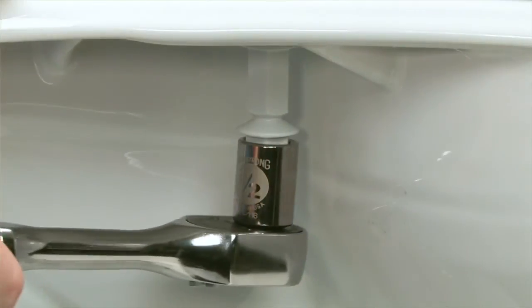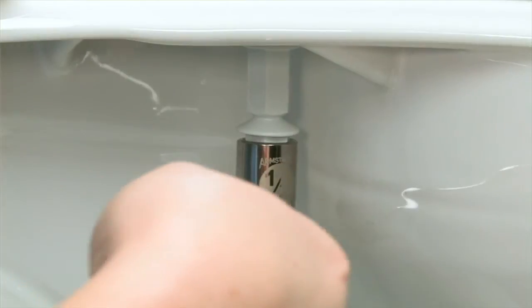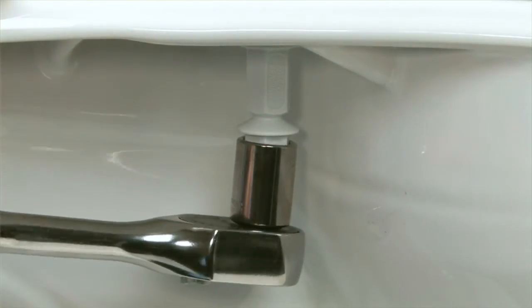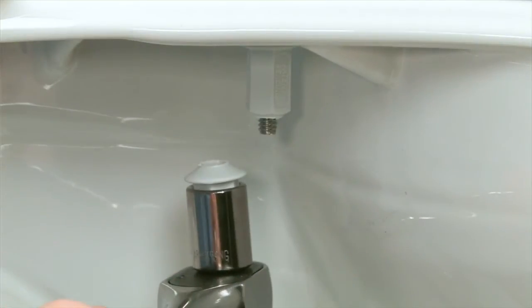Now that the seat is properly positioned, we can tighten it down for placement. Turn the bottom portion of the stay tight nut with your wrench, and when the proper level of torque is applied, the bottom portion of the stay tight nut is engineered to break free.